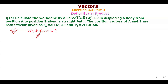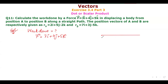Question number 11: force is given as 3i + 4j + 5k, displacing a body from position A to position B along a straight path. The position vector r_A = 2i + 5j - 2k and r_B = 7i + 3j - 5k.